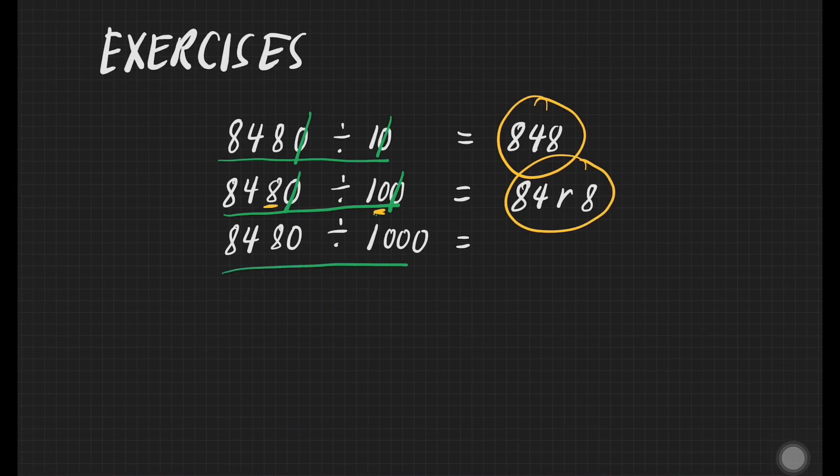Next, we have 8,480 divided by 1,000. We may cancel one from the divisor and one from the dividend. But we still have two zeros in our divisor. It also means that we'll have a two digit number in our remainder. That will give us 8 remainder 48. And that's so simple. That's it.